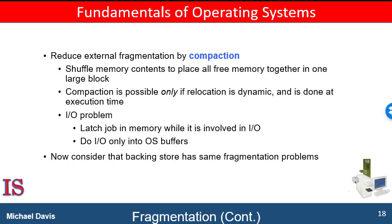When compaction is possible, we need to determine the cost. The simplest compaction algorithm is to move all processes toward one end of the memory and all of the available blocks toward the other end, producing one large available block.